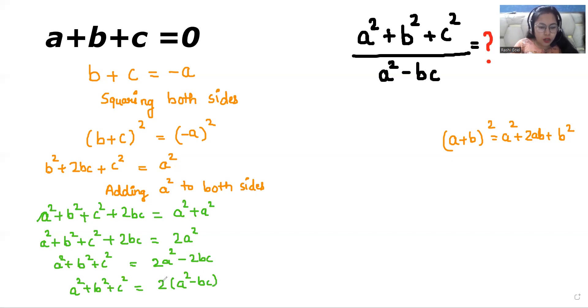Now on the right hand side 2 times a squared minus bc. So if I take a squared minus bc to the other side it comes in division. So it looks like a squared plus b squared plus c squared over a squared minus bc is 2. We have to find the value of a squared plus b squared plus c squared over a squared minus bc, so the value is 2.